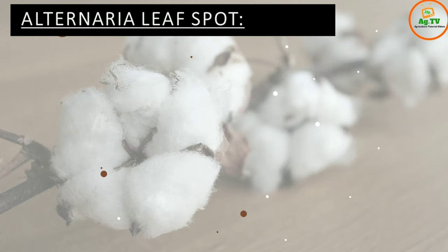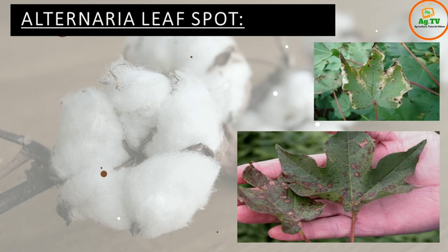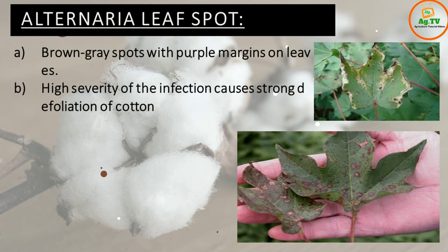Next, Alternaria leaf spot. You can see the photos on screen. In Alternaria leaf spot, you can see brown-grey spots on the leaves, along with purple coloration on affected leaves.